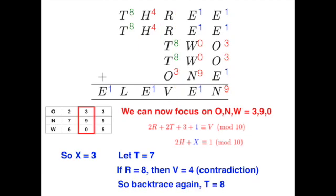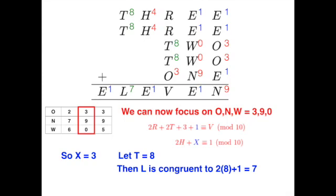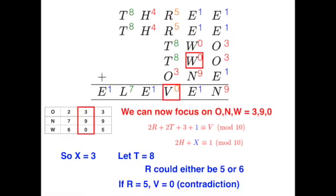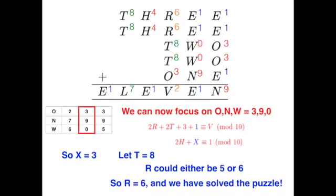L is then 7, and similar logic from before allows us to deduce that R must be 5 or greater, which means R is 5 or 6. If R is 5, V would be 0, contradicting the fact that 0 is already represented by W. Finally, R equals 6 solves the entire puzzle.